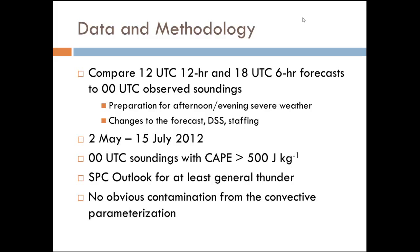I did have to throw out several cases where there was contamination from the convective parameterization, especially since we're looking at that 0Z timeframe. A lot of times if there is going to be convection, it may have already occurred. I used BuffKit to look at the overall temperature and moisture profile over several hours, seeing if anything indicated the shallow or full convective scheme had activated, and also looked at model output to see if convection was being produced at 0Z or within the next hour.